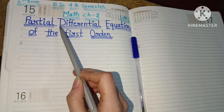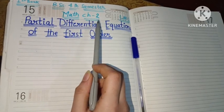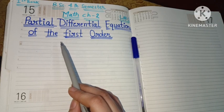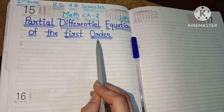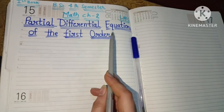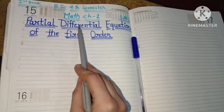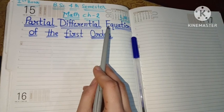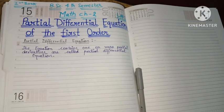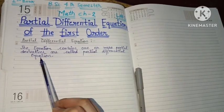Maths chapter number two is named 'Partial Differential Equations of the First Order.' First, we will discuss what a partial differential equation is. An equation which contains one or more partial derivatives is called a partial differential equation. The equations which contain more than one partial derivative are called partial differential equations.